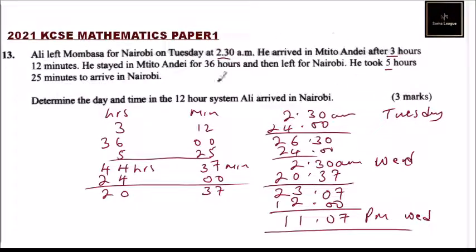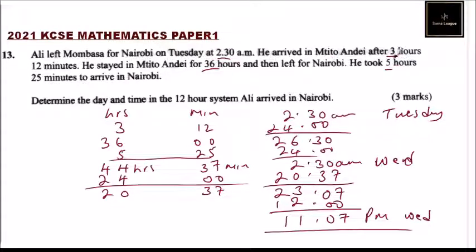So that is when he arrived in Nairobi after leaving Mombasa at 2:30 a.m. He rested 36 hours in Uchitwandei, took 5 hours 25 minutes to arrive in Nairobi, and 3 hours 12 minutes to reach Uchitwandei. That's how you go about that question and you'll get yourself full marks.